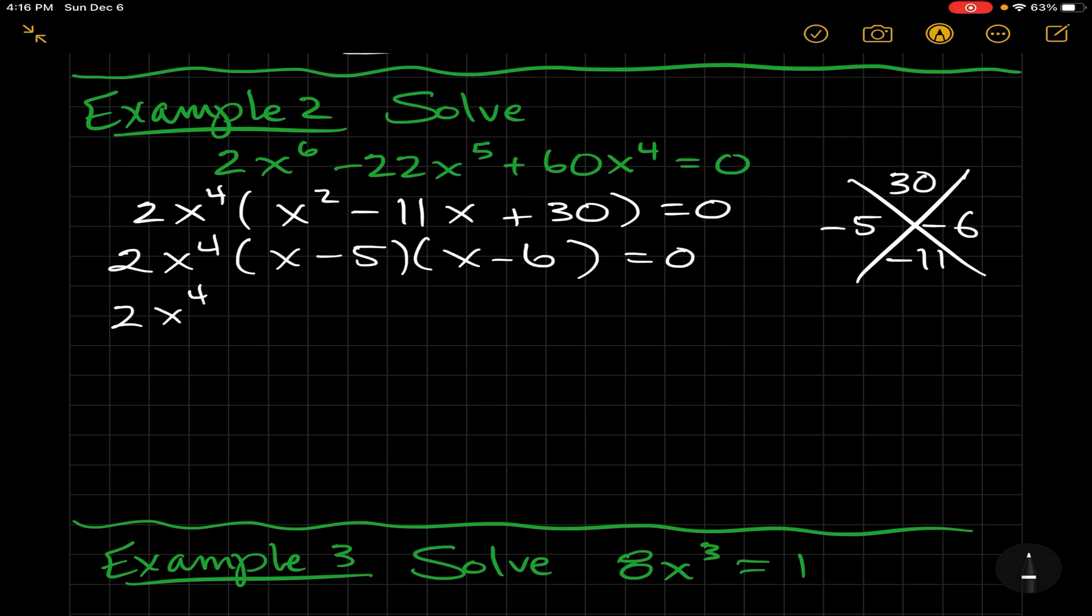Now using the zero product property, I could have just divided the two away in the very beginning since this is an equation, and that would have been just fine. So here, notice dividing the two off, it's gone already. And x equals zero. Because technically that's just x times x times x times x equals zero, and you could use the zero product property.